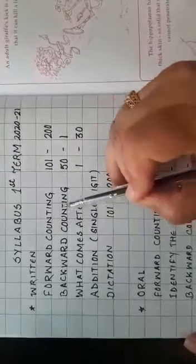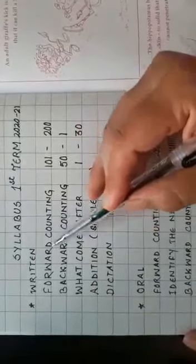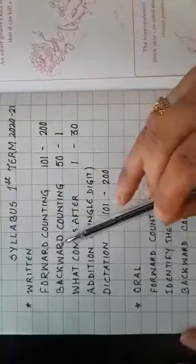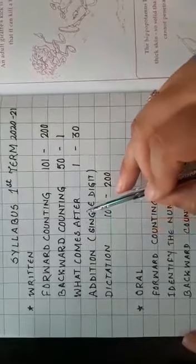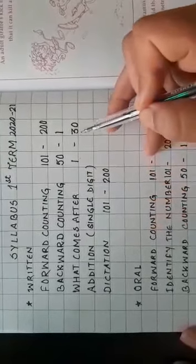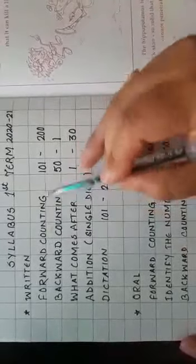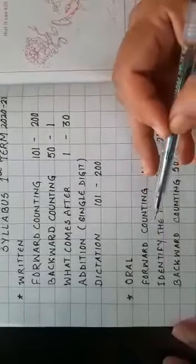I want to clarify some of the points. In return, forward counting we have already done that is from 101 to 200. Backward counting 50 to 1, what comes after, that is from 1 to 30, addition sums.